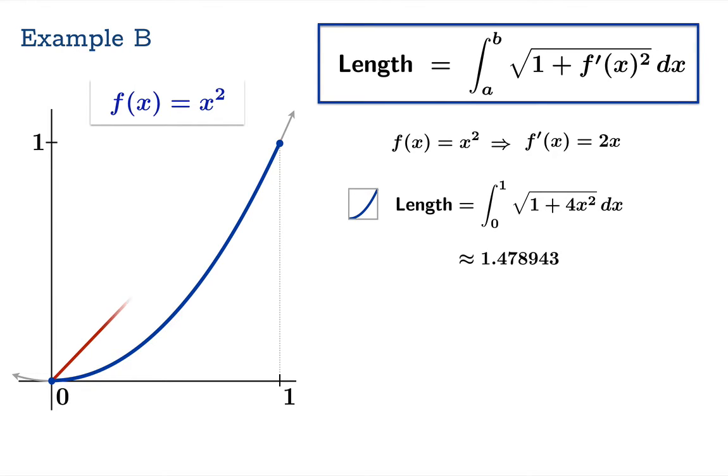So consider the straight line from (0,0) to (1,1). Its length is square root of 2 and we notice that the square root of 2 is approximately 1.41 and this is a shorter route from (0,0) to (1,1). We expect that number to be smaller than the arc length integral we just calculated and in fact that's the case.